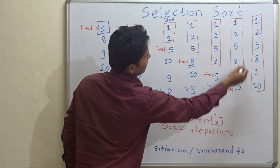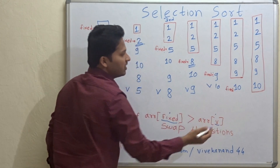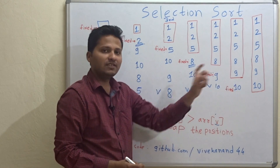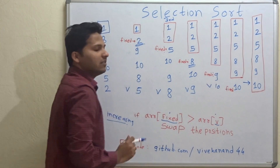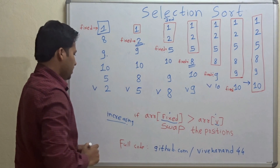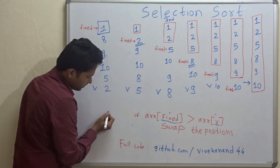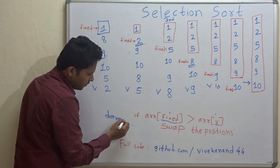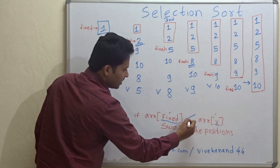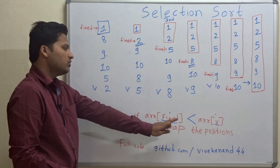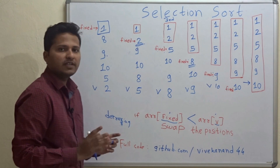In the next pass we have 5 positions sorted. The fixed pointer will point to the last element, but as this is the last element there is no need of comparison, so straight away we have got all the elements sorted. If you want to sort the array in decreasing order, just one change will make it: swap the elements when the fixed position value is less than the variable position value, and you will get the array sorted in decreasing order.